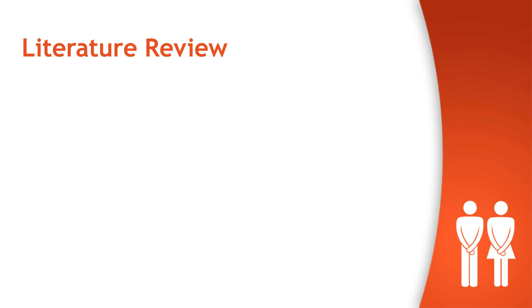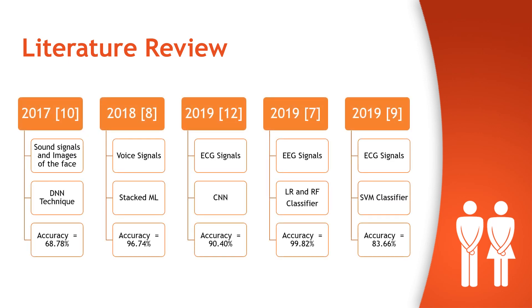Now we will discuss some previous work related to gender classification. In 2017, sound signals and images of the face were used and a DNN technique was applied, achieving an accuracy of 68.78%. In 2018, voice signals were used for gender classification and a stacked ML technique was applied, achieving a maximum accuracy of 96.74%.